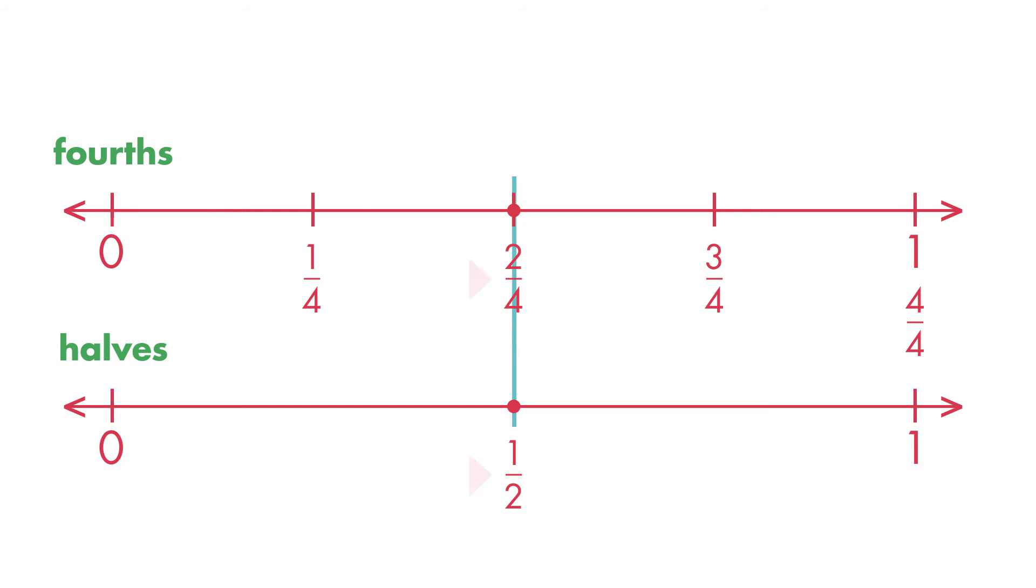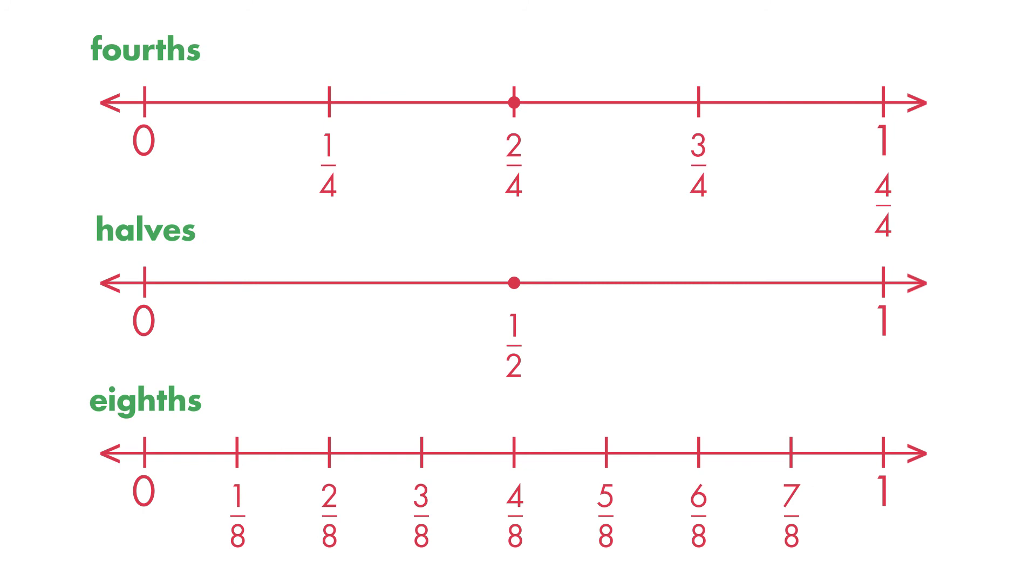Now, let's show eighths on another number line. How many eighths are equal to two-fourths or one-half? Four-eighths are equal to two-fourths and to one-half.